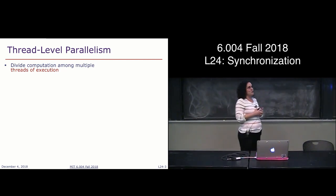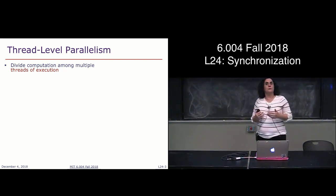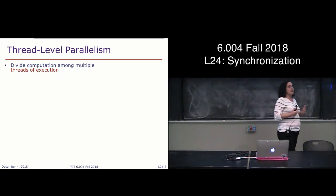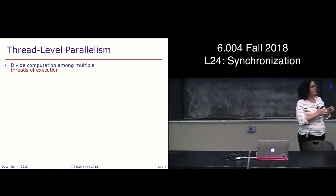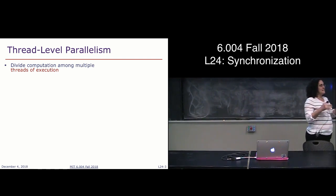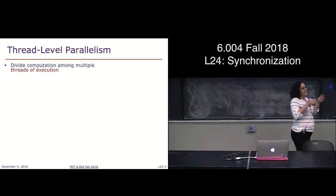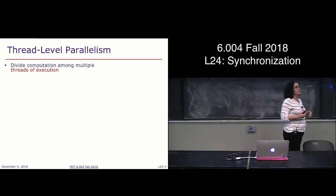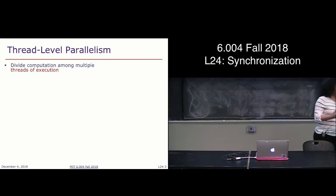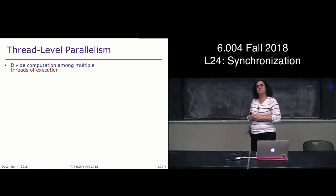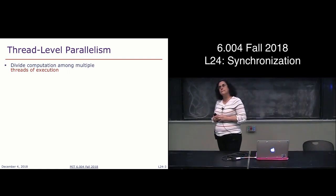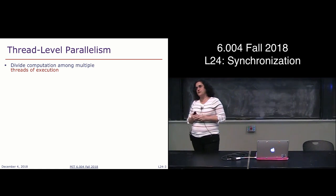We have multiple cores sitting on the same chip, and we want to make use of them. We want to try to execute instructions in parallel. A core is the main processing component of your CPU — not the entire CPU, as they might be sharing memory and things like that, but it's the main processing portion. You could do two add operations if you had two cores rather than just one. Each core could have its own register file.